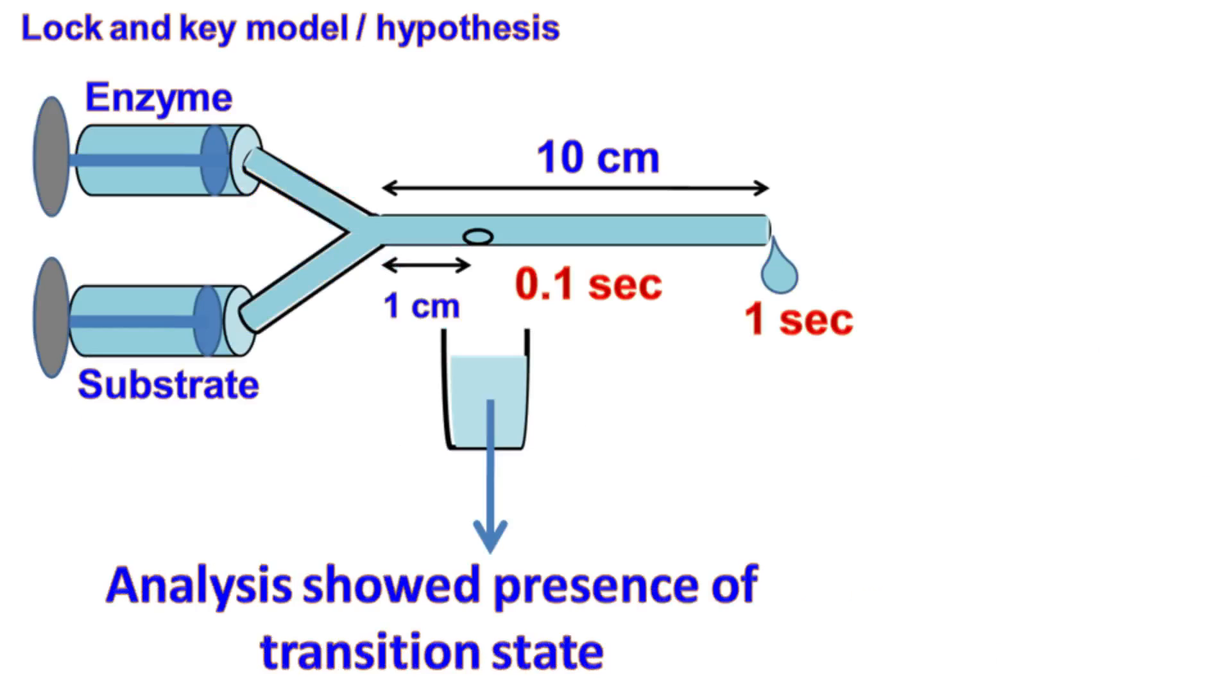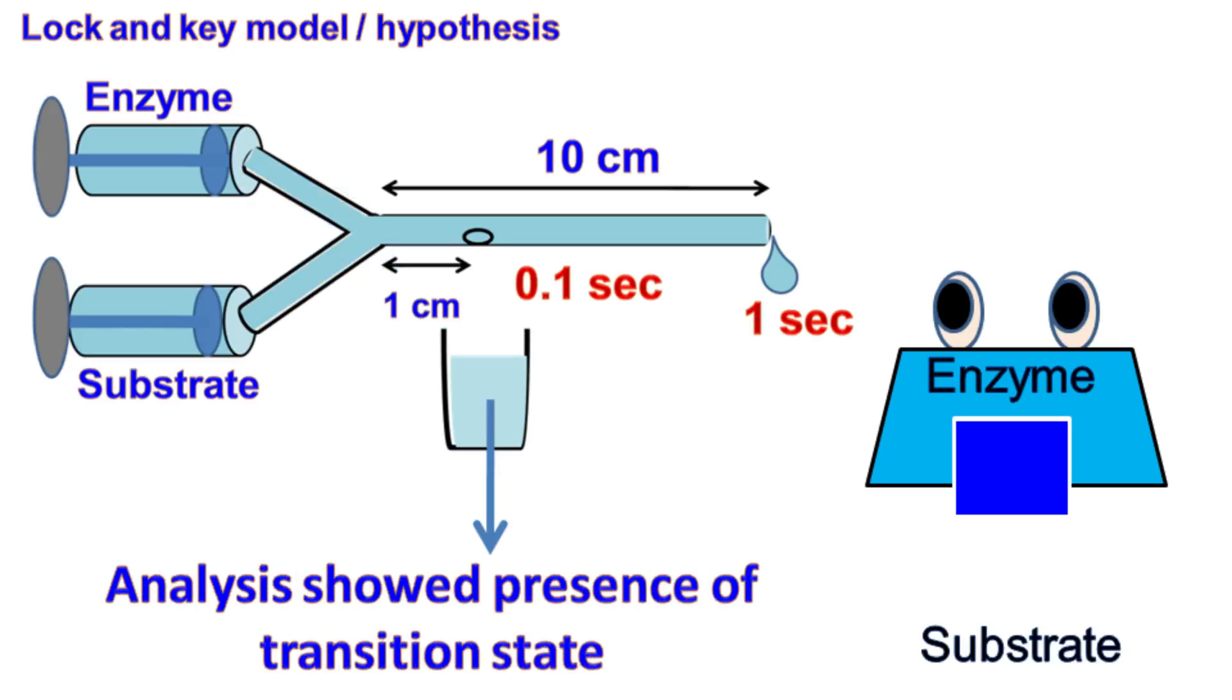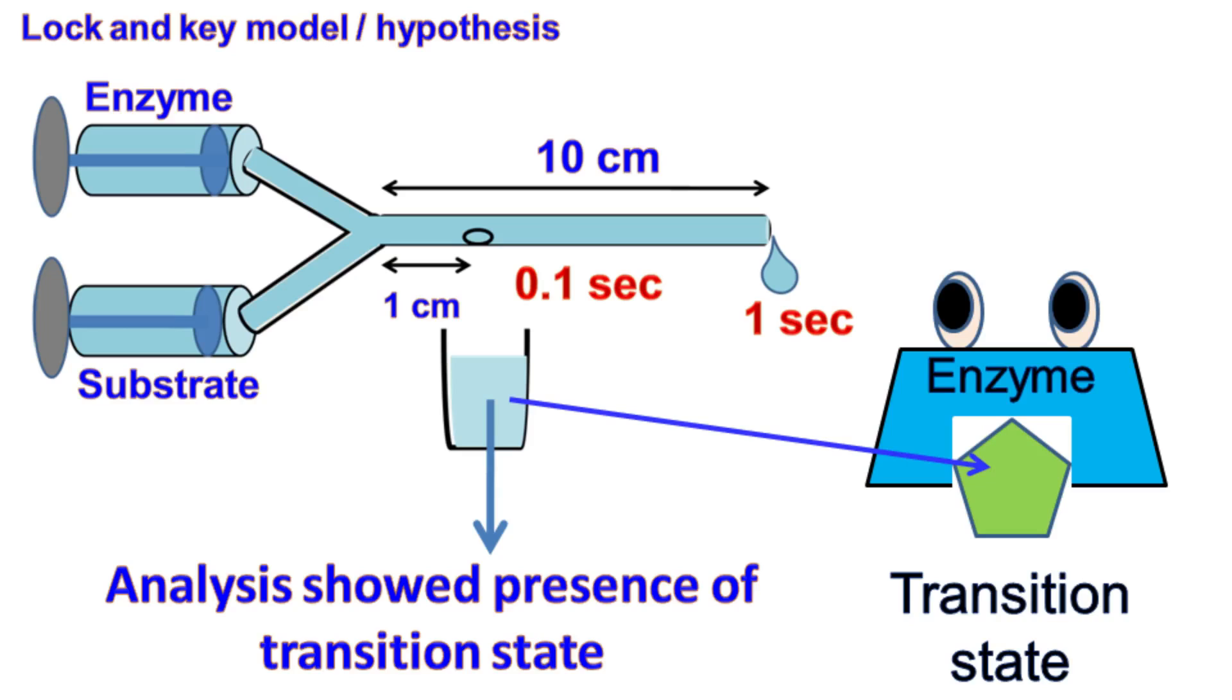When scientists analyzed this mixture, they discovered that the substrate is converted into an intermediate state or a transition state before getting converted into a product.